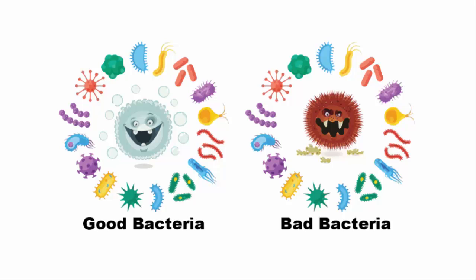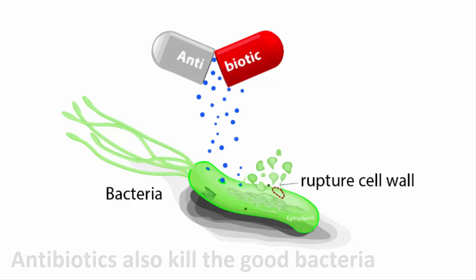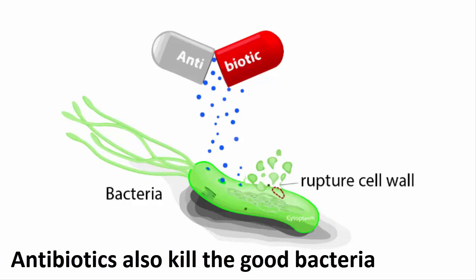Bad bacteria make you sick by affecting your vital organs. That is why antibiotics are given to kill these bad bacteria. But in the process, antibiotics also kill the good bacteria. This can cause an imbalance of bacteria in the body that can lead to many problems. That is why antibiotics are to be taken super carefully.